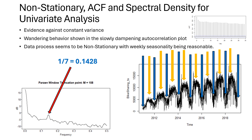We can also see from this realization that there is evidence against the constant variance assumption, as we can see a fan-like spread in the data. This really makes sense — just by looking at the realizations, we can see that people prefer going out in the summer versus riding in the cold. This fits our intuition.